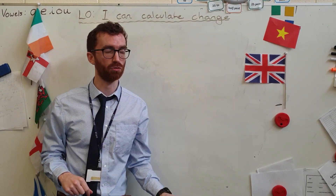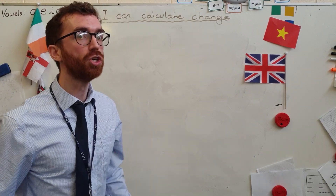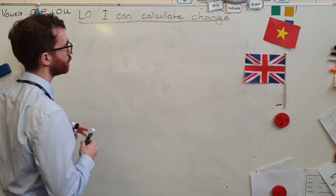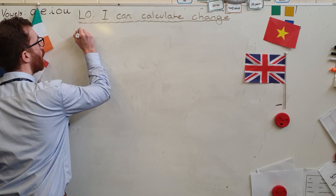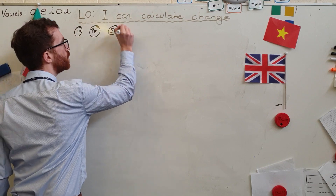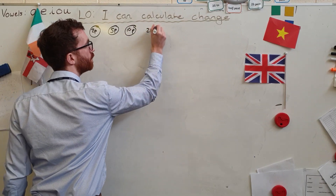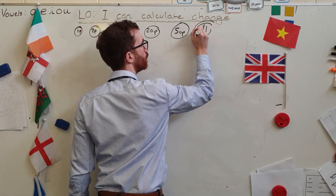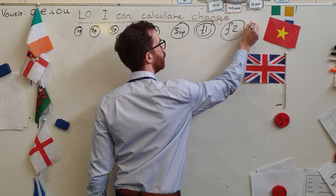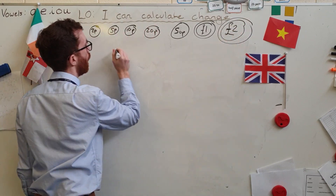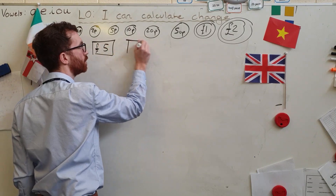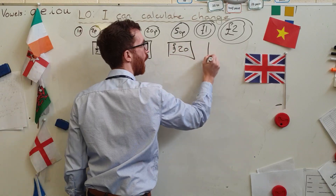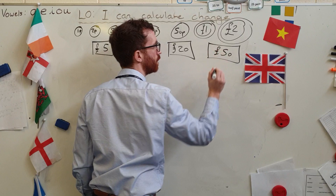Here's your first little challenge. On a piece of paper, could you write down every single coin and note that we have got? We've got a 1p, a 2p, a 5p, 10p, 20p, there's a 50p, there's a pound, and of course there is a £2 coin as well. And then for notes, we've got a £5 note, a £10 note, a £20 note, and a £50 note.